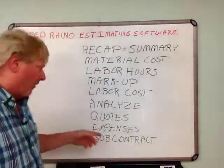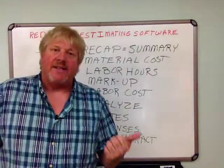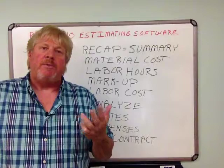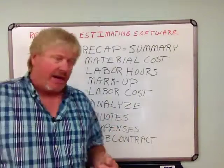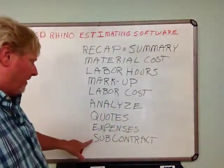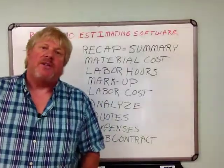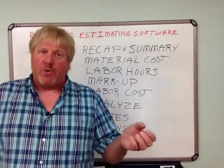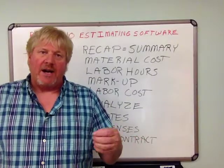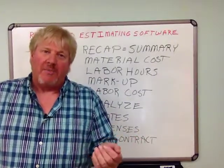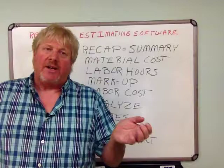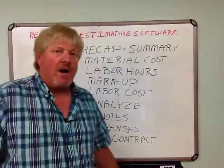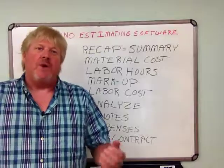The other thing is that you input your expenses — expenses like rental equipment, permit fees, third-party testing, maybe mobilization costs. You input your expenses, and finally, if you get subcontractor numbers — say you're bidding an electrical project and you're required to provide pricing for fire alarm but you don't do fire alarm — you go to fire alarm contractors, get numbers from them, and input their numbers into subcontracts in the recap.